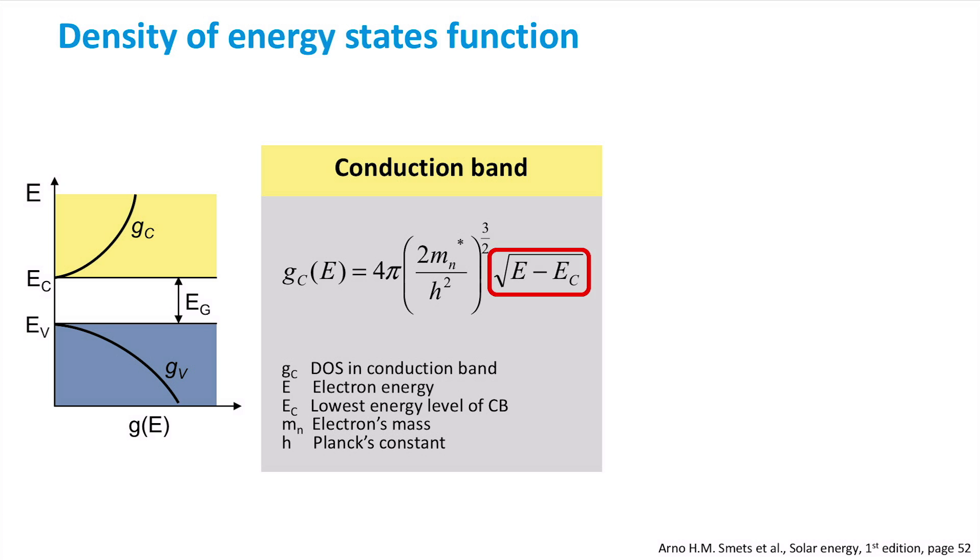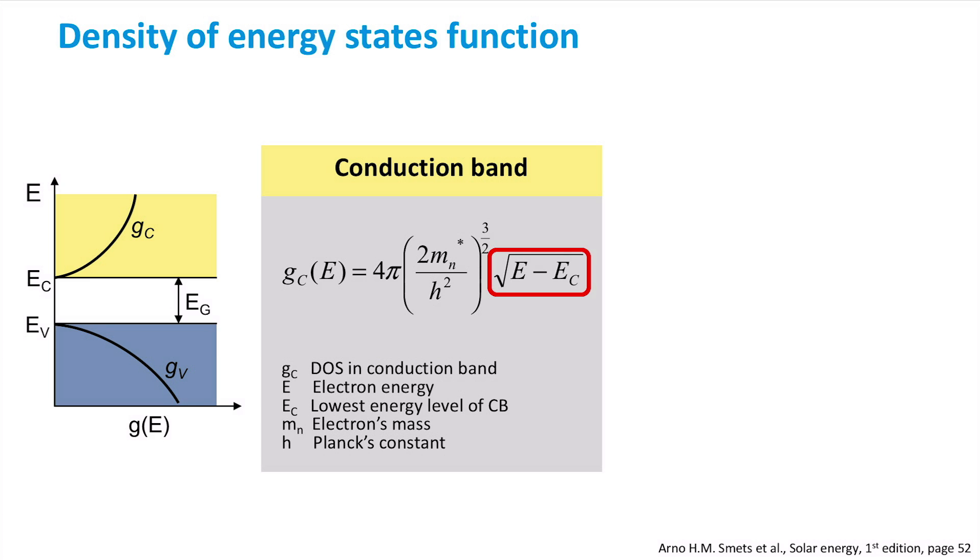As the energy gets further away from the conduction band edge denoted by Ec, the amount of allowed energy states increases. Now, let's continue with the valence band. The equations are very similar to that of gc, but now we have to use the effective mass of holes instead of electrons.